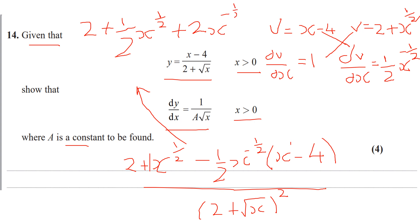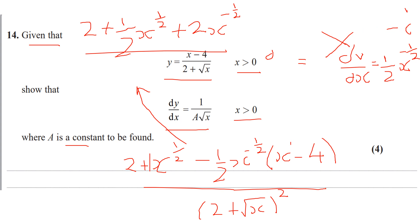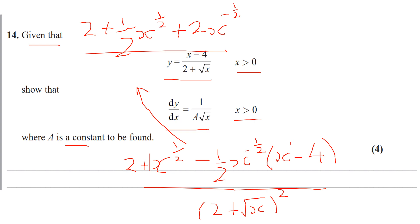So we've got all that over the denominator squared. I expanded the bracket and collected like terms of the numerator: 1x to the power of a half minus a half x to the power of a half — because you add the powers, minus a half plus 1 makes positive a half — so 1 minus a half is positive a half. And then I've got plus 2x to the minus half, because this times this makes positive 2x to the minus half.